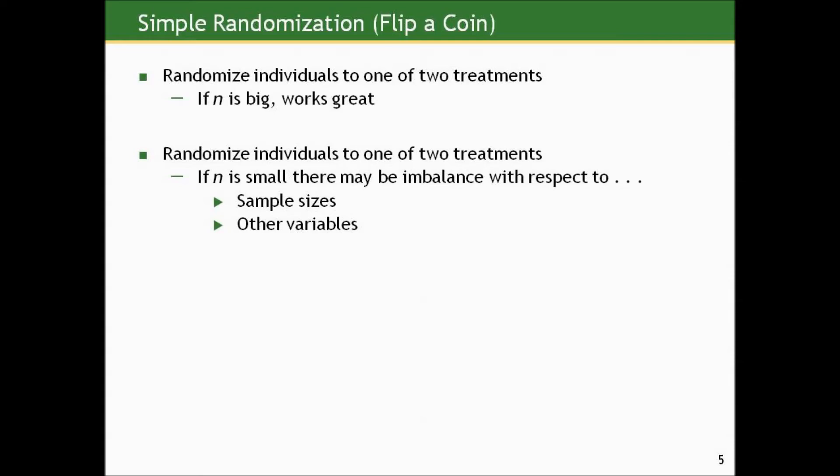So let's talk about simple randomization, flipping a coin. This concept works really well if you're randomizing a large number of individuals. Because over a large number of flips, a coin will on average be 50% heads, 50% tails. So if we're randomizing to two treatments, we want roughly the same number in each group.